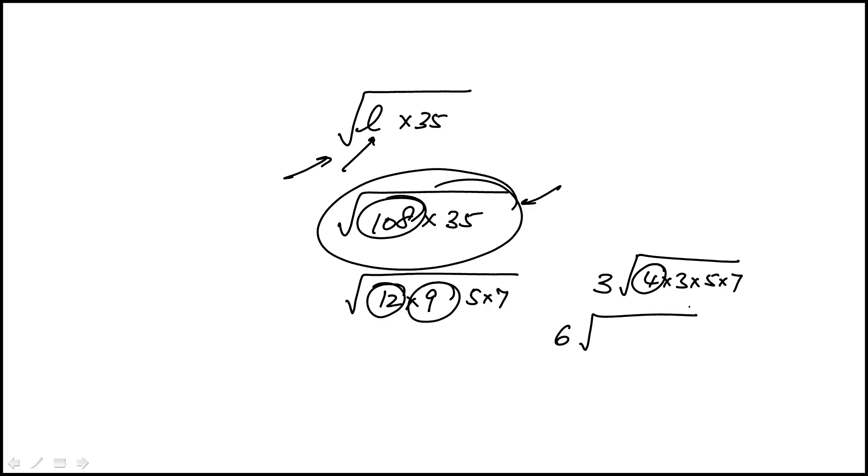So that becomes 6 and then this is 105. So the answer would be 6 times square root of 105, which is choice H.